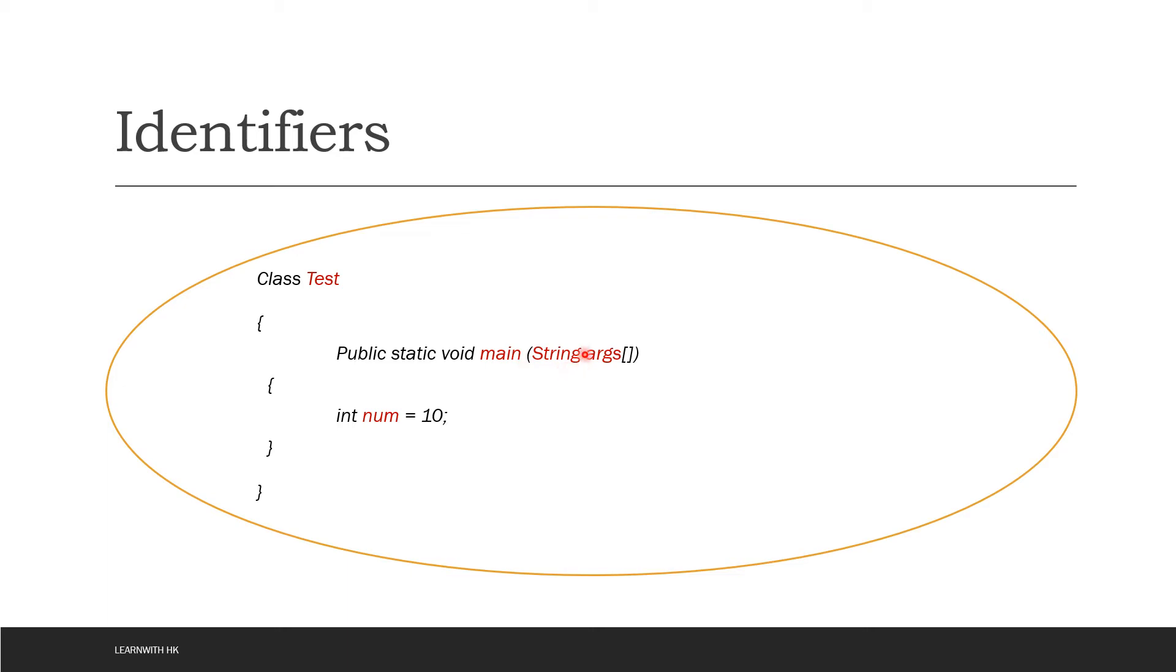This string, string is a predefined class, so it's also an identifier. Then arguments is nothing but the variable name of the type array. And this int num, num is nothing but again a variable name. So there are five identifiers in this small code snippet.